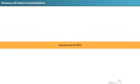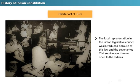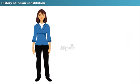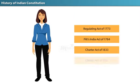The final Act under Company Rule was the Charter Act of 1853. It was a significant constitutional landmark — for the first time, local representation in the Indian Legislative Council was introduced, and the covenanted civil service was thrown open to Indians as well.